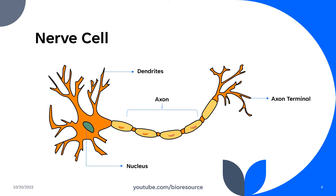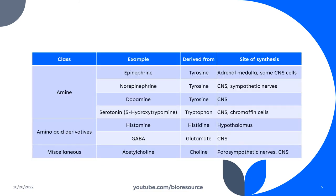These are the different classes of neurotransmitters with their examples. They are derived from certain amino acids, and the site of synthesis is also noted. The first class is based on amines, and examples include epinephrine, norepinephrine, dopamine, and serotonin. These are derived from tyrosine.